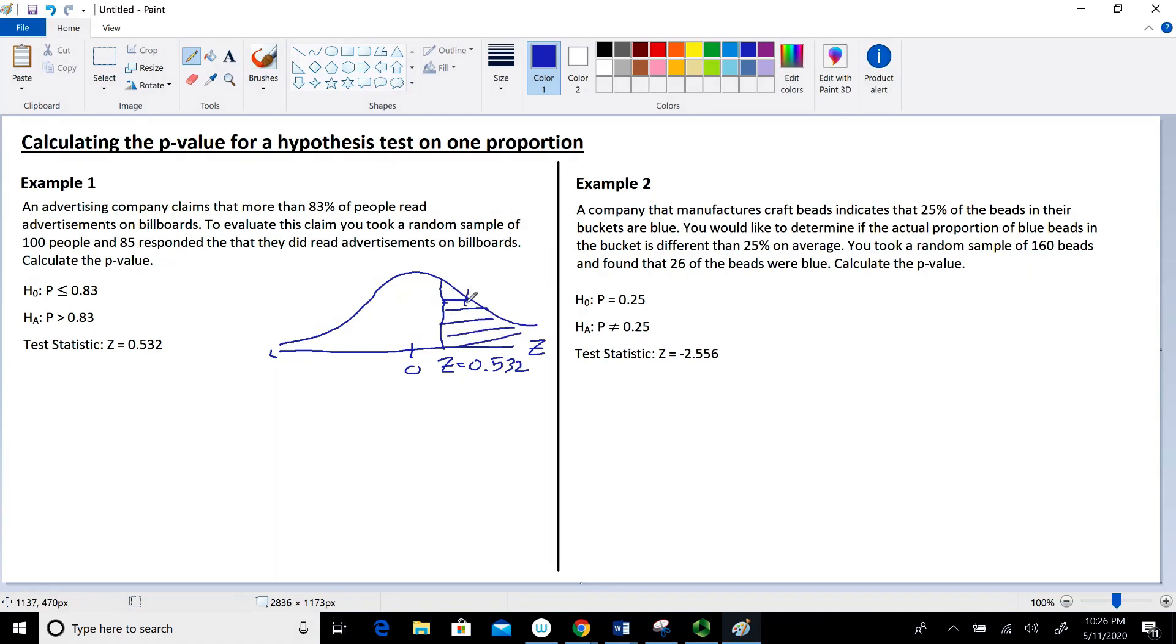To calculate this p-value, we use the normal CDF function on our calculator. There are other ways like using the standard normal table, but I'm going to focus on the normal CDF function. In that function there are a few inputs we have to figure out.